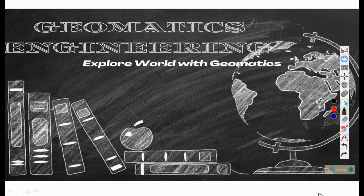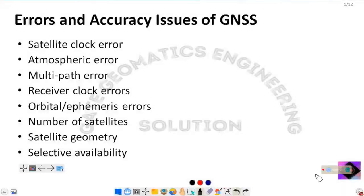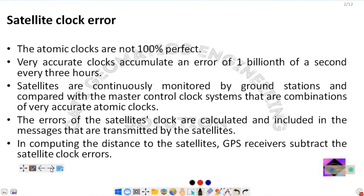Hello everyone, welcome back to our channel Gate Geomatics Engineering. Please go through our videos and subscribe to our channel to support us. Today we shall start a new topic: errors and accuracy issues of GNSS. I have enlisted various types of errors, from satellite clock errors to selective availability, and we shall discuss each one by one.